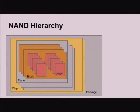Regarding sizes: there's one to eight chips per package, one to four planes per chip, maybe a few thousand blocks, and maybe a few hundred pages per block. Each page is a few K in size — just to give the quick order of magnitude.